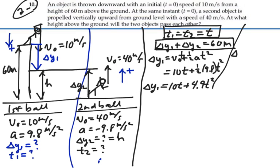For our delta y2, we have that that is equal to v0 t plus one-half acceleration t squared. And that is equal to 40t plus one-half times a negative 9.8 times t squared. So this would be 40t minus 4.9 t squared. And that is our delta y2.